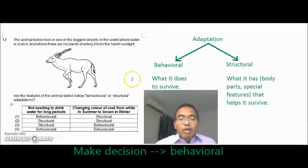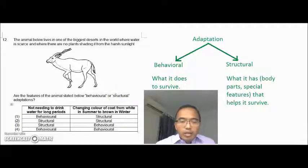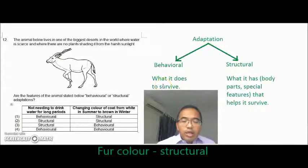And structural—what it has, the parts that it has, like body covering and the different parts of its body. Here you see changing color of coat from white in summer to brown in winter. It has a white coat in summer and it has a brown coat in winter. Coat of fur is obviously a structural adaptation.